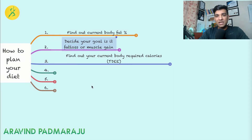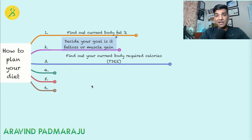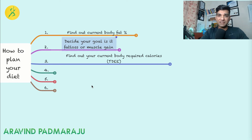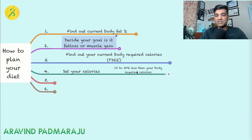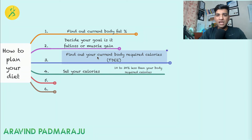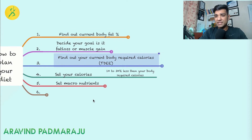Once you know your energy requirement, for fat loss you need to be in a calorie deficit — eating less than your body requires, or being in a negative energy balance. The best way to set your calorie target is to start with 10 to 30% less than your maintenance calories. For example, if my body requires 2,700 calories, starting at 1,800 to 2,000 calories is a good range.